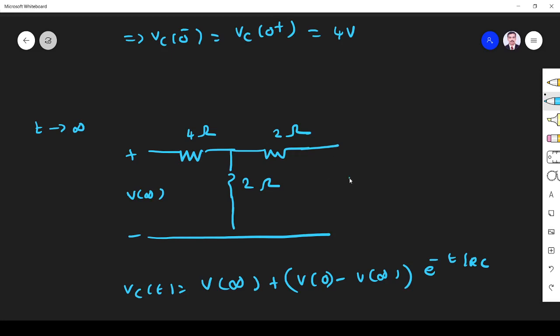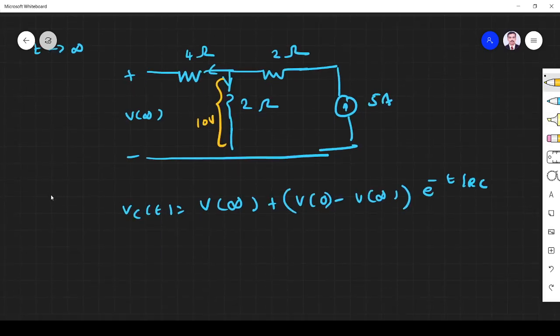Here, voltage across the capacitor V(infinity). The 5 ampere source is available, so voltage across this element is the same V(infinity). It is 5 ampere here. It is open, so here current is 0, 5 ampere. So 2 times 5 equals 10 volts. So voltage across this side is 10 volts. So V(infinity) is 10 volts.